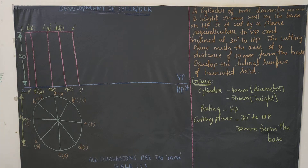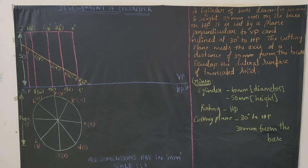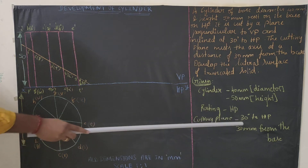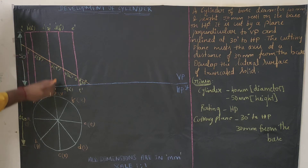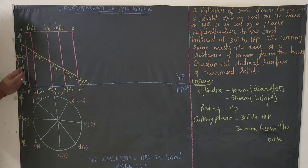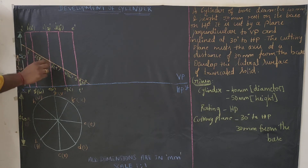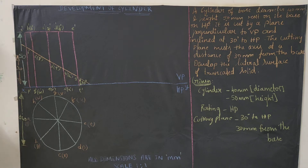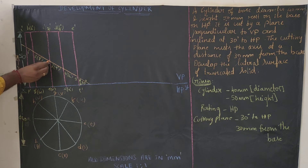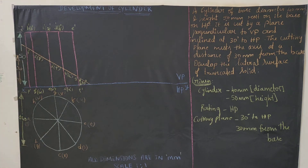Now let us draw the cutting plane. The cutting plane is at an angle of 30 degrees to HP and meets the axis 30 mm above the base. Mark a point 30 mm from the base. Use your protractor, draw a horizontal reference line, then draw a line at 30 degrees. The inclined cutting plane line is drawn at 30 degrees, extending front and back with a gap, and also to the reference line side.